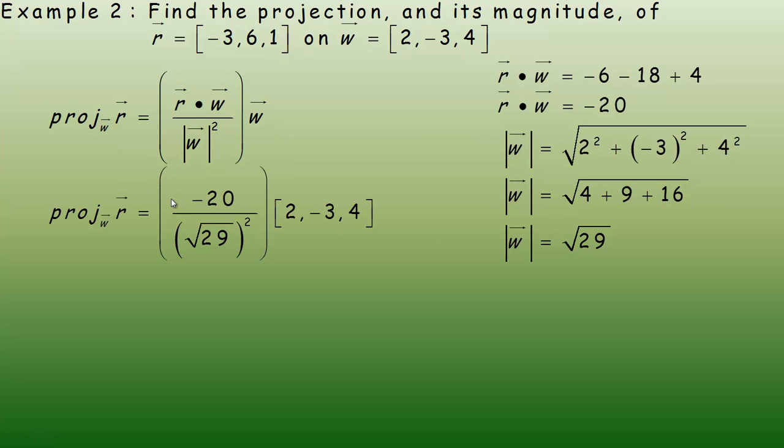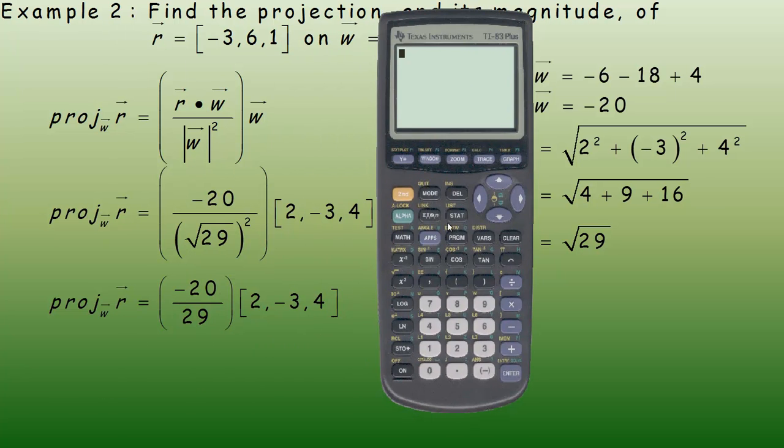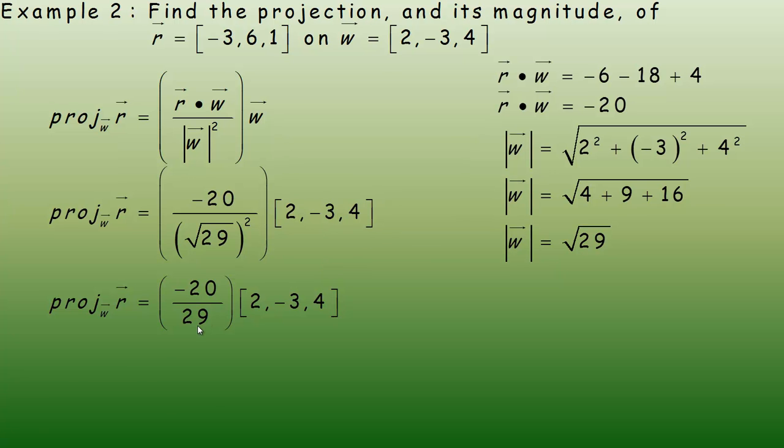Let's calculate the projection vector. R dot w was negative 20, the length of w is root 29, so we're squaring root 29 here and multiplying by the w vector. Root 29 squared is 29. We're multiplying negative 20 over 29 by each component: negative 40 over 29 for the x component, 60 over 29 for the y component, and negative 80 over 29 for the z component. That's the projection vector.